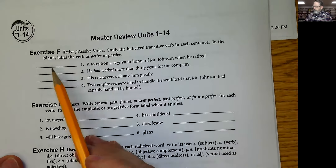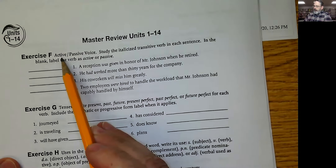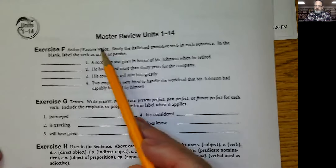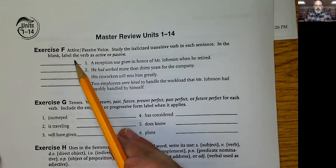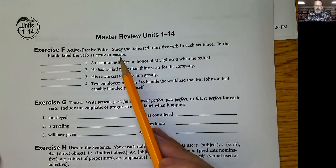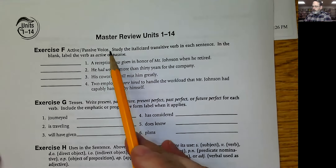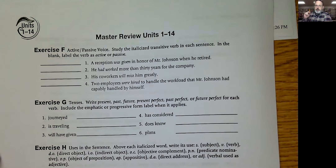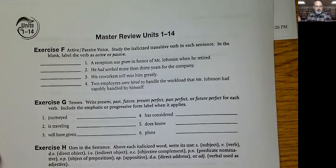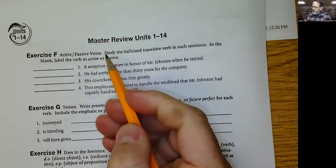Exercise F — we're talking about active and passive voice. Study the italicized transitive verb in each sentence. In the blank, label the verb as active or passive. So all of these verbs are transitive, meaning that the action is transmitted from one noun to another — there's a complement in there. Active means the subject is doing the work, doing the verb, and passive means somebody other than the subject is doing the verb. So let's look at the first one.